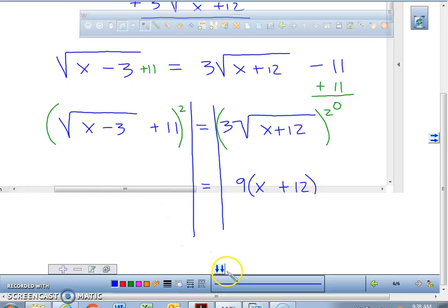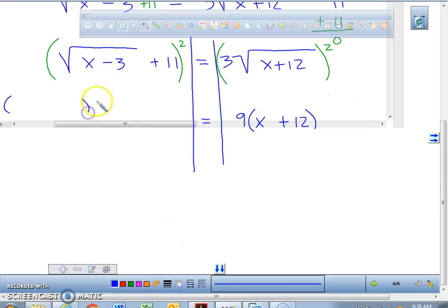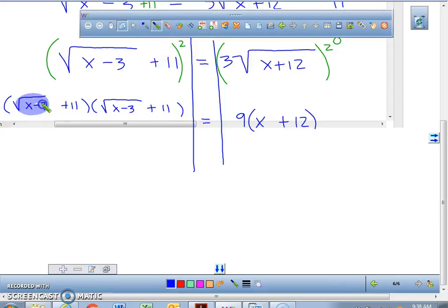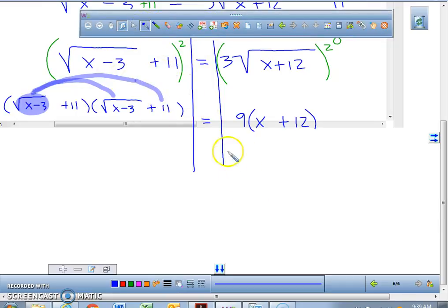Now, this one is a little bit trickier. I'm going to put the square root of x minus 3 plus 11 times the square root of x minus 3 plus 11, and we're going to actually use the FOIL method to solve this. We're going to take this square root and multiply it to the first term and multiply it to the second term. The first term is very easy. The square root of x minus 3 times the square root of x minus 3 is just x minus 3. That's how you get rid of a radical. You need to multiply the radical times itself.